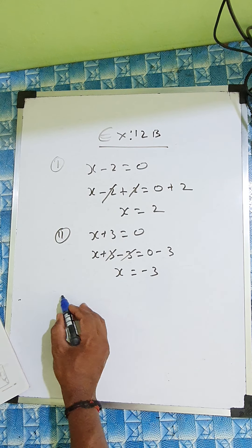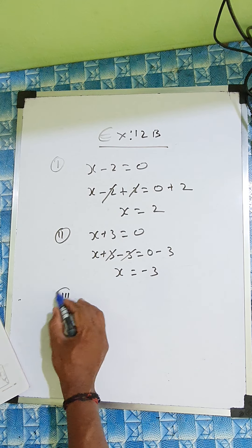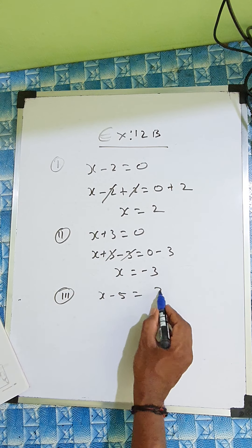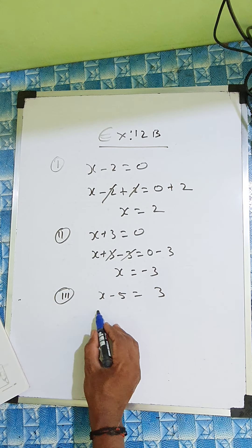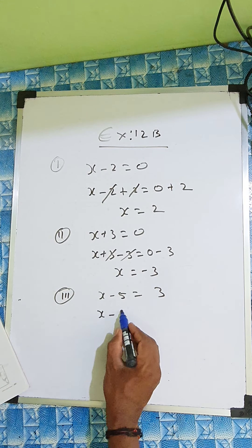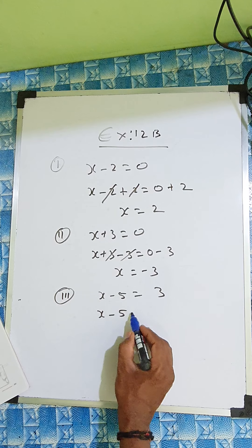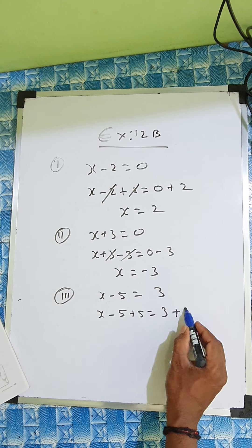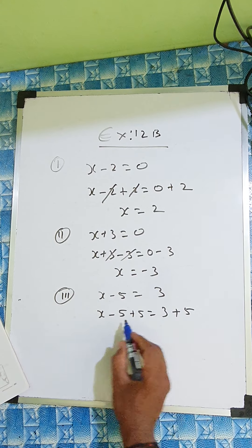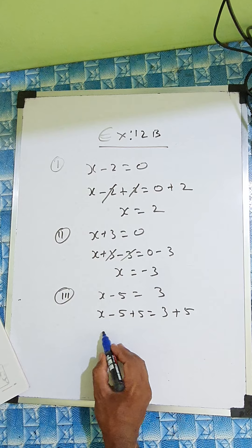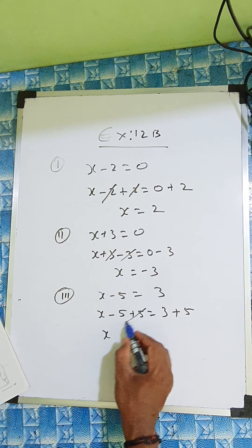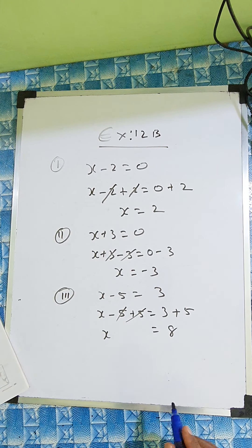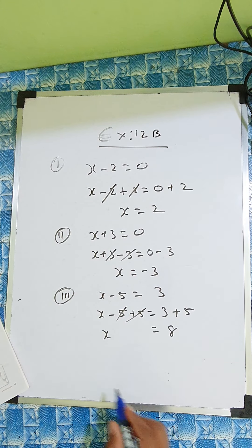See the third one: x minus 5 equal to 3. That means x minus 5, right here plus 5, and here also plus 5. Whatever we are writing on one side, same we write on the other side. So these two will cancel. 3 plus 5 is 8, so x equals 8.